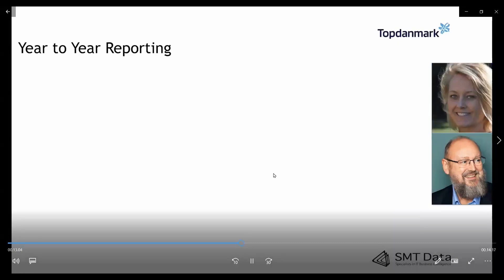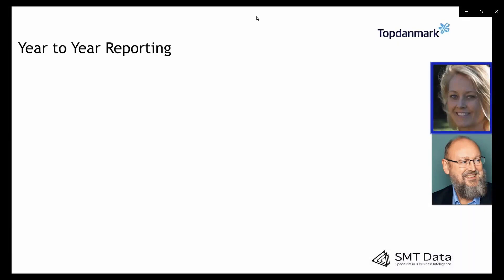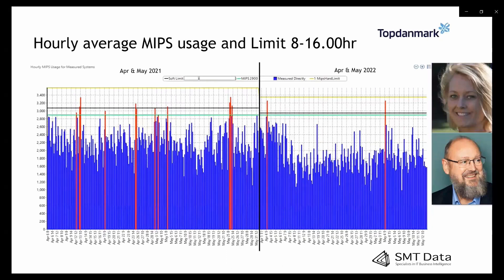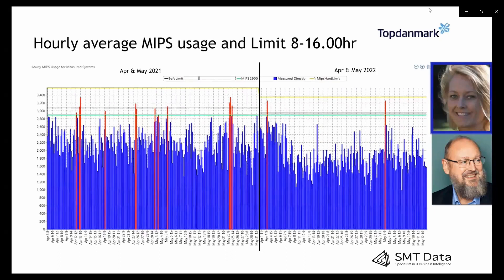Then we have year-to-year reporting. When working with the management group, they need to see results — and this is why we have year-to-year reporting. This is really interesting for management because they love this picture. They can see from April to May 2021 and from April to May 2022. Many companies increase capacity year-to-year, but at Top Danmark we actually managed to decrease our capacity. First we looked into online capacity — tuning and making changes to online applications, and moving and restricting batch away from the online period. When that looked okay, we went into the batch and looked at night hours to see what could be tuned and moved to areas with lower MIPS load.